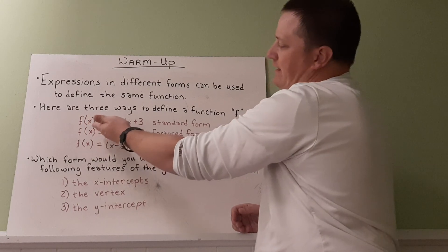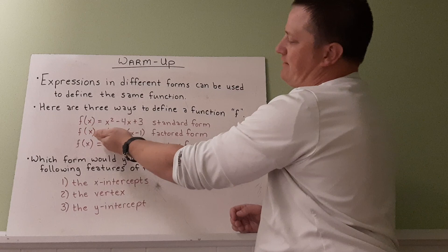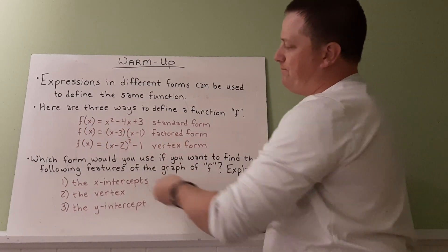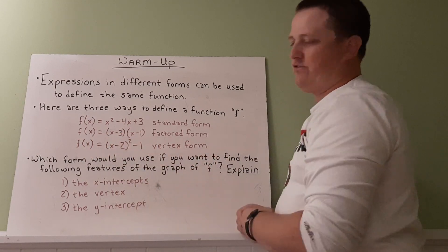So we have f(x) = x² - 4x + 3, standard form. f(x) = (x - 3)(x - 1), factored form. f(x) = (x - 2)² - 1, vertex form.